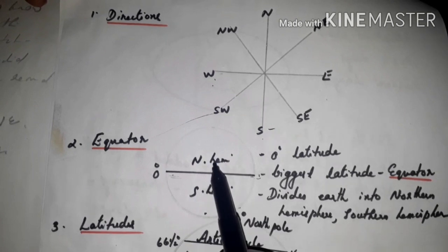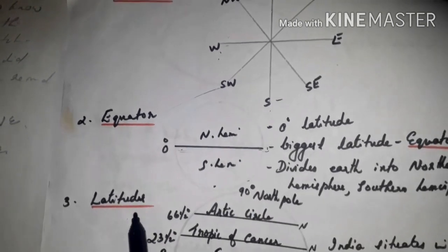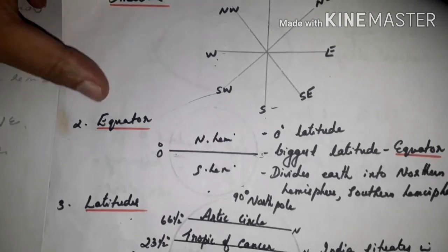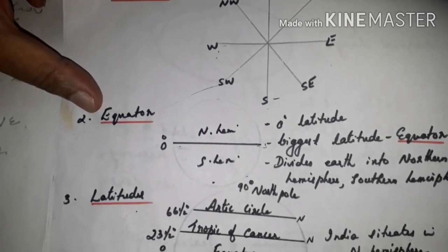Next, latitudes. Latitudes are imaginary lines drawn parallel to equator.